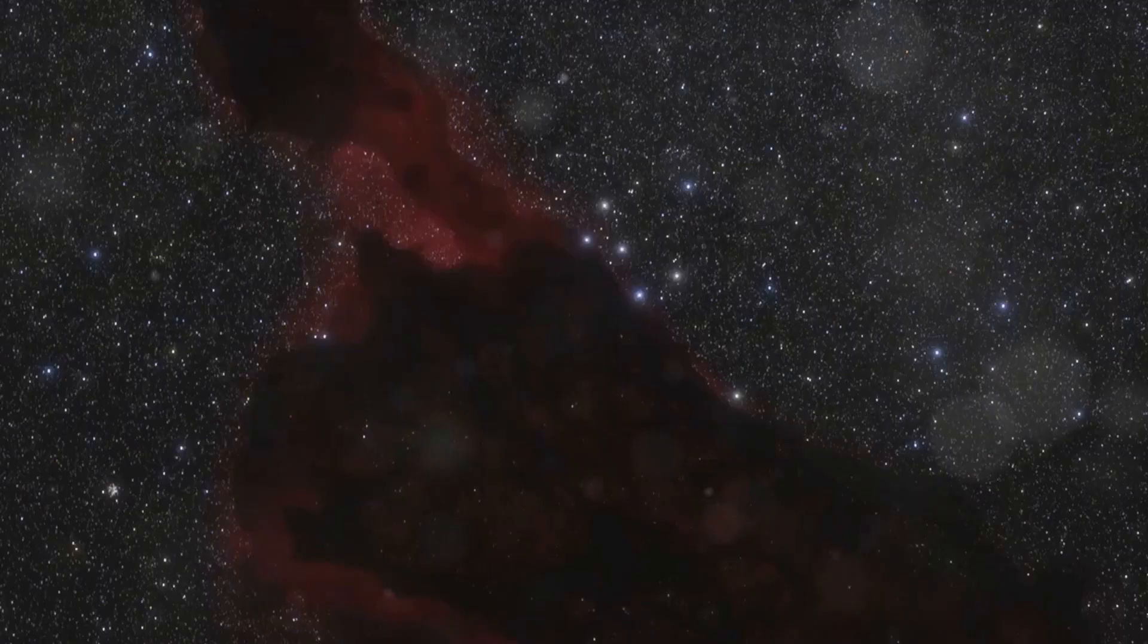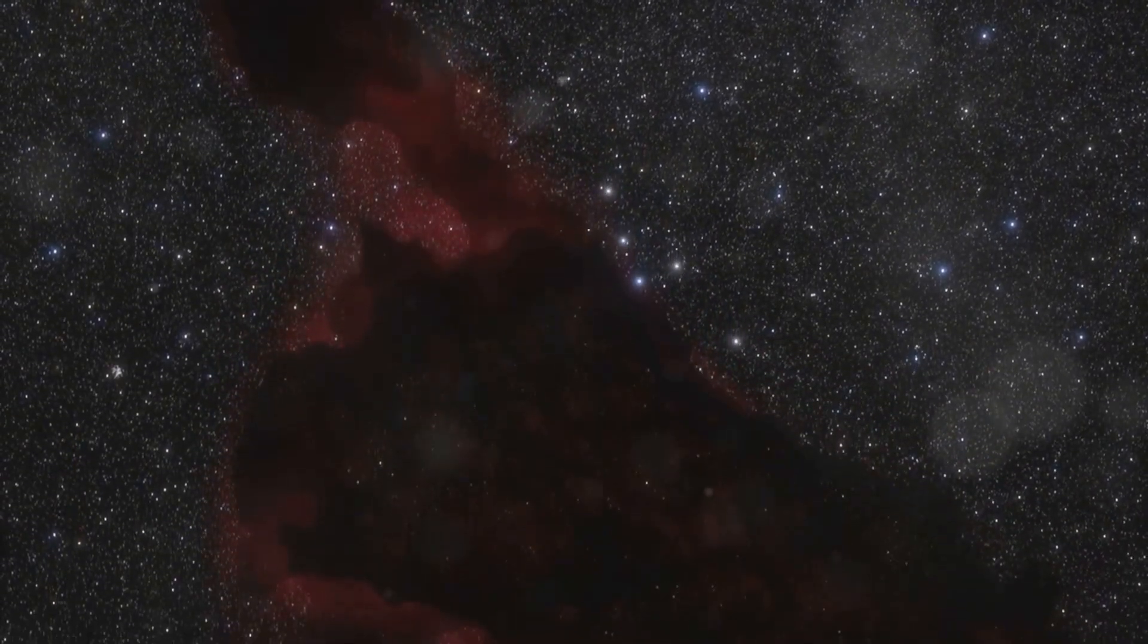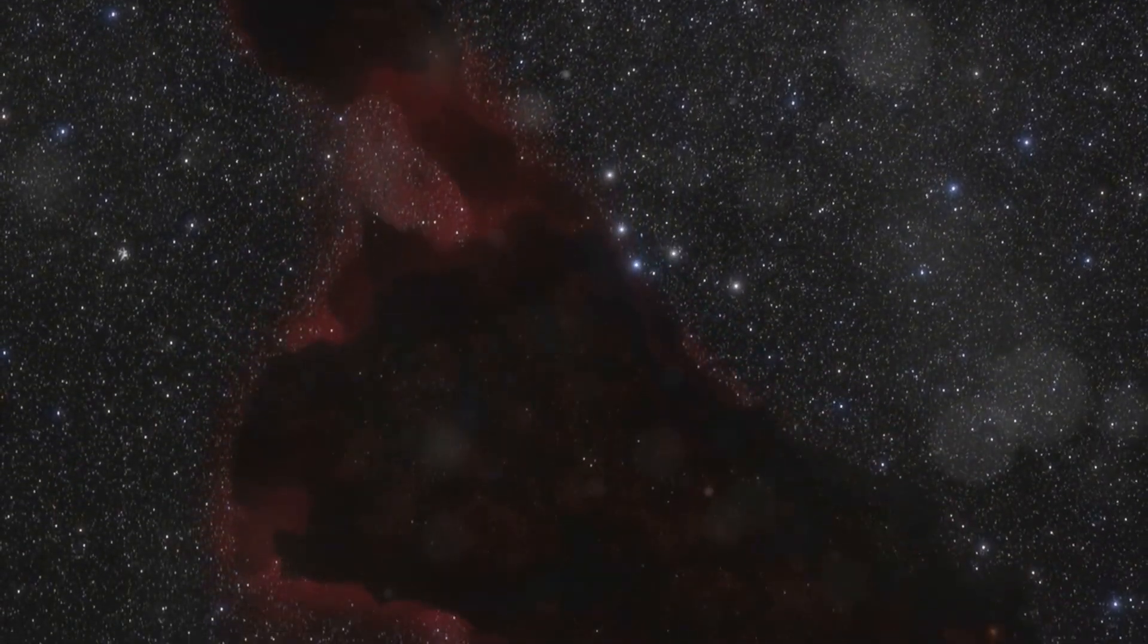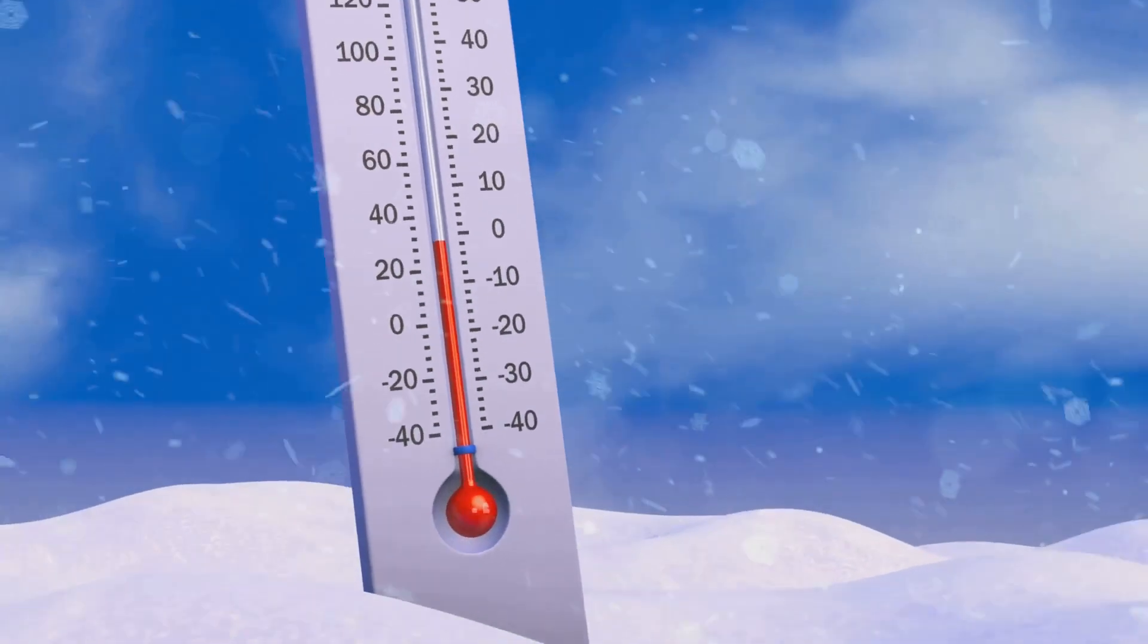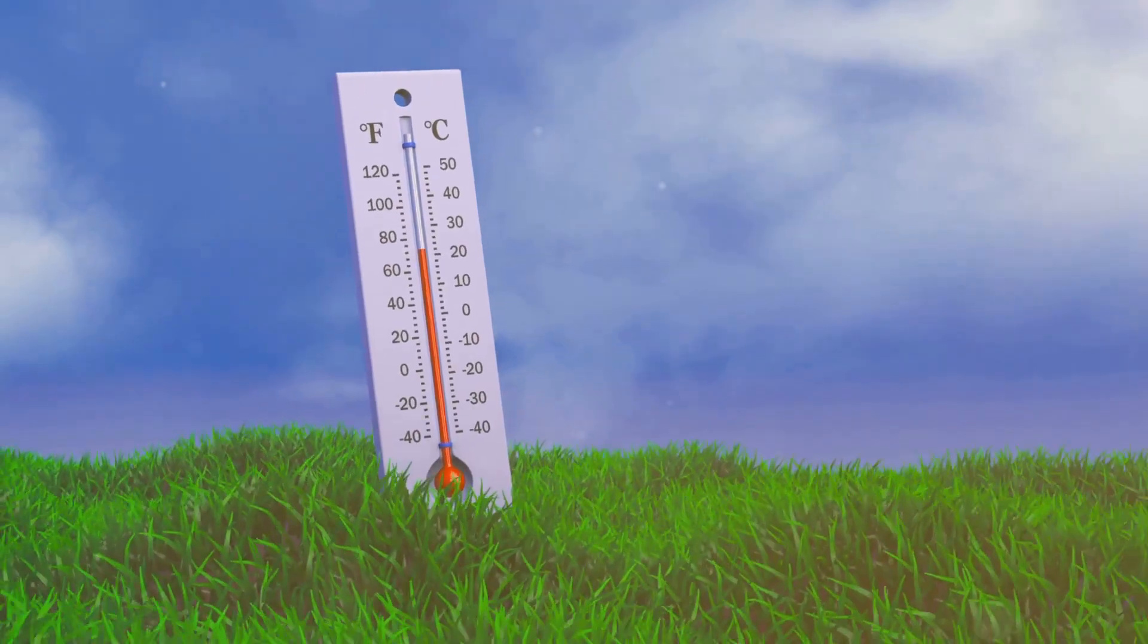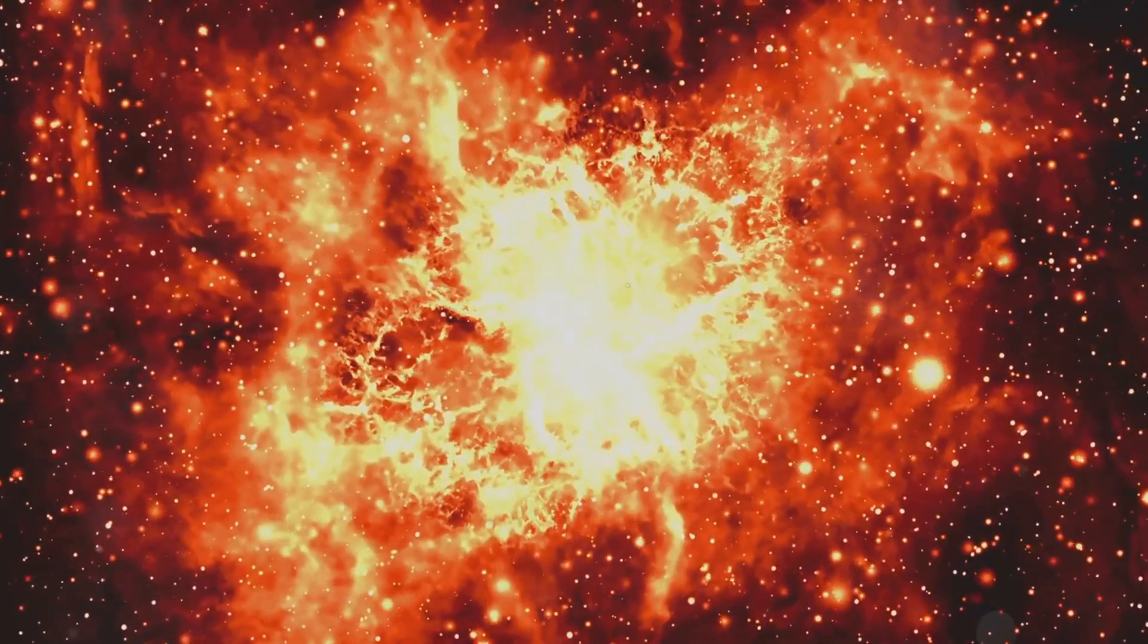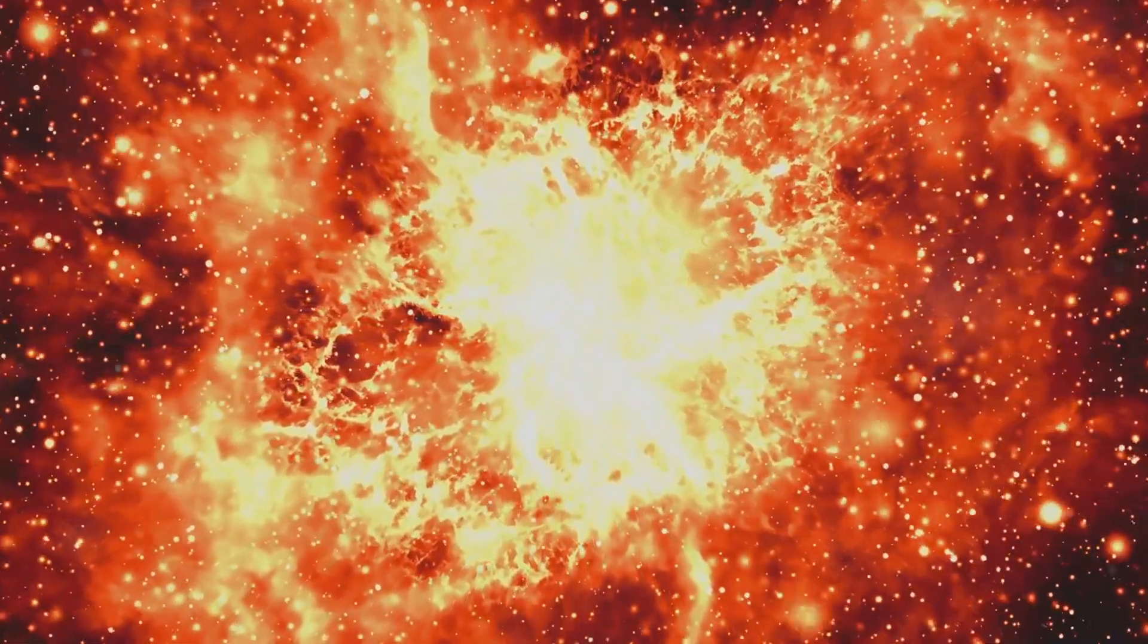The Boomerang Nebula, located some 5,000 light years away in the constellation Centaurus, holds the record for the coldest known place in the universe. The average temperature of space is a frigid 2.7 Kelvin, which is about minus 455 degrees Fahrenheit. But the Boomerang Nebula? It takes coldness to a whole new level, clocking in at a bone-chilling 1 Kelvin.